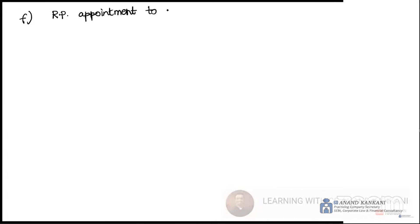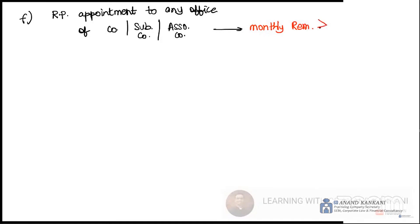Next, you have this transaction: if you are appointing a related party, or a related party is appointed to any office of the company, or a subsidiary company, or an associate company — the limit given here is that if that person's monthly remuneration is equal to or more than ₹2,50,000 per month, then that limit becomes applicable.